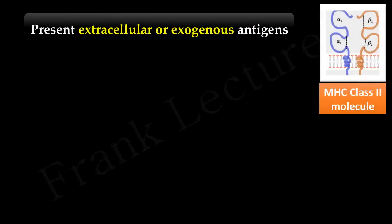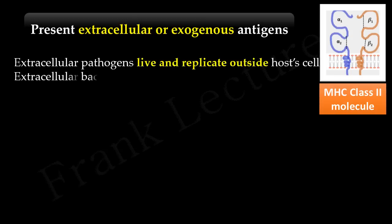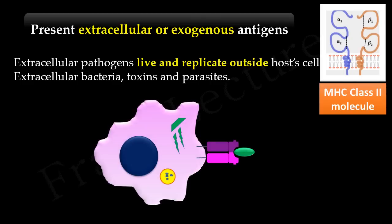MHC class 2 molecules present peptides derived from extracellular pathogens. Extracellular pathogens live and replicate outside human cells, for example extracellular bacteria, toxins, and parasites. There are specialized cells known as antigen presenting cells which internalize extracellular pathogens and break them down into fragments. The peptide fragments of these pathogens are then presented by MHC class 2 molecules for recognition by T cells.